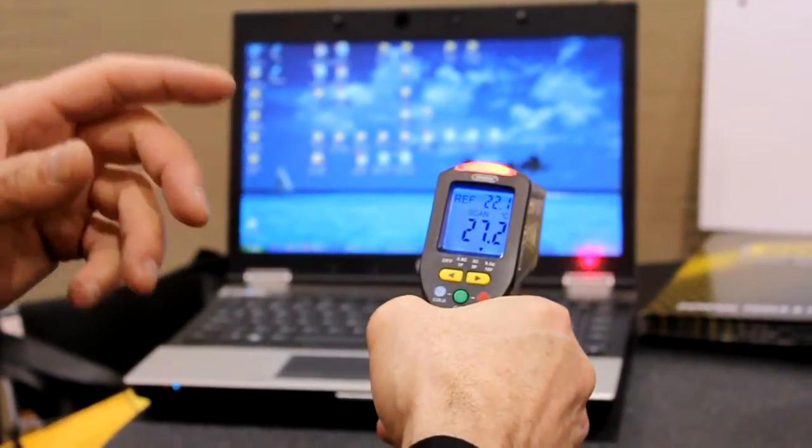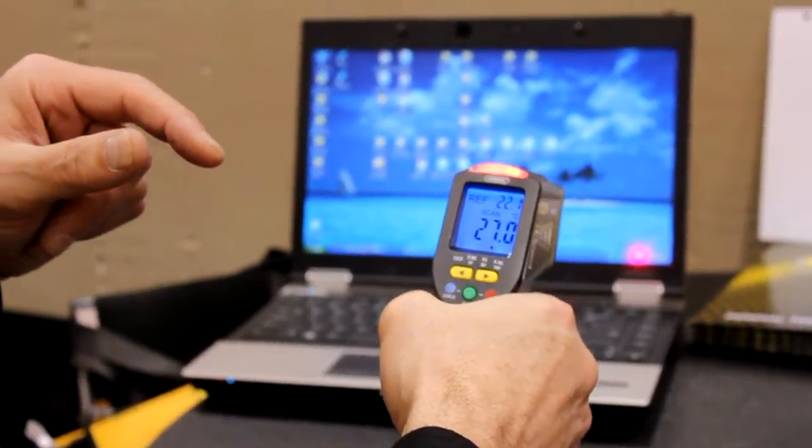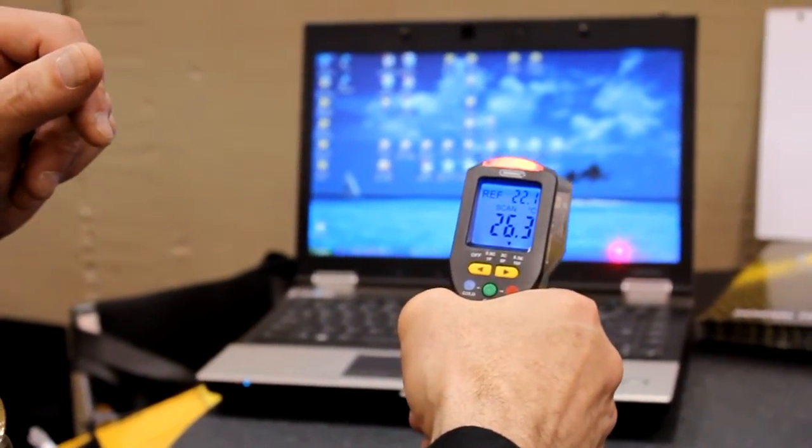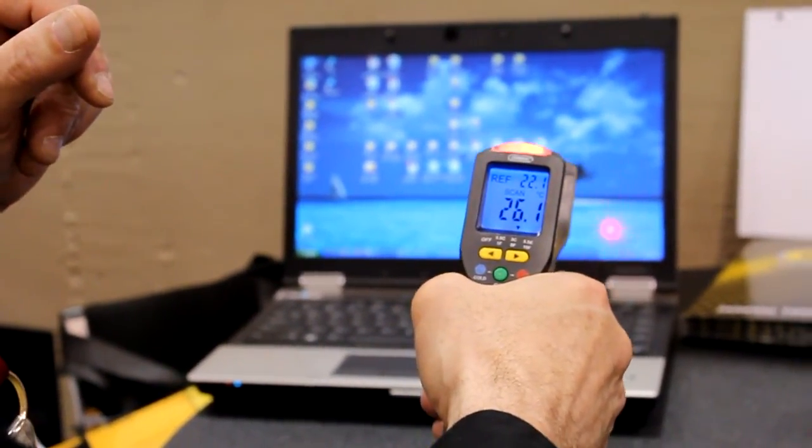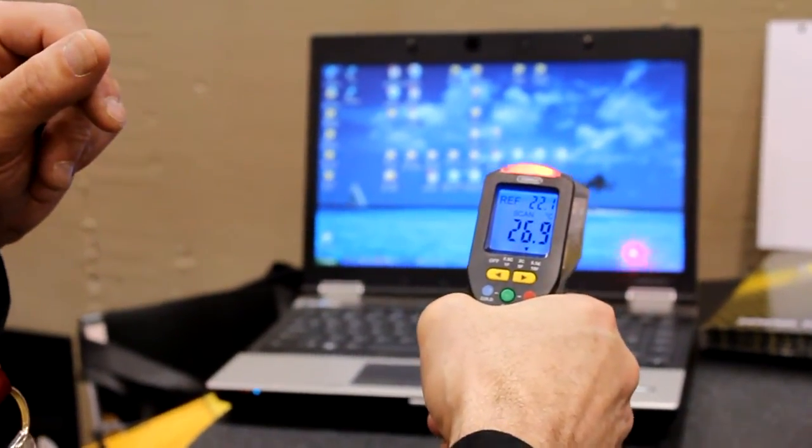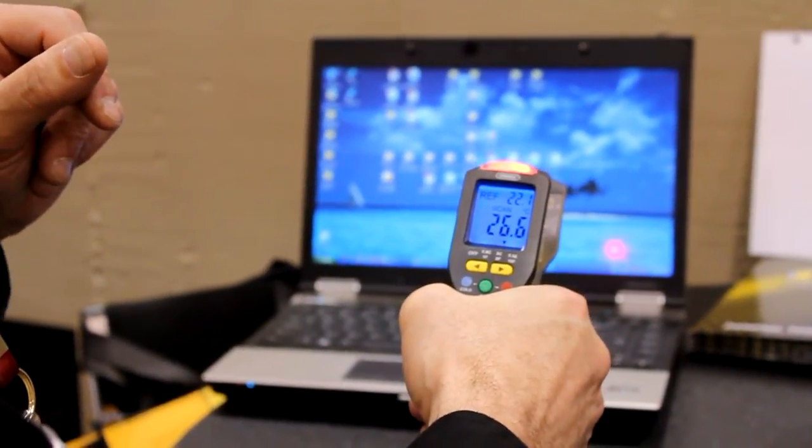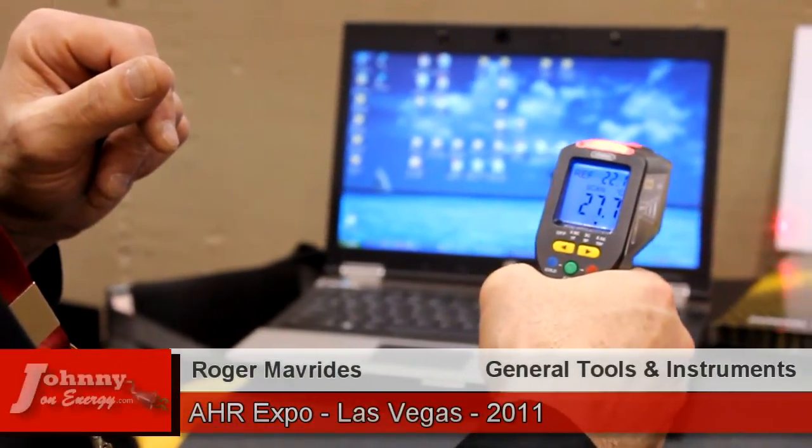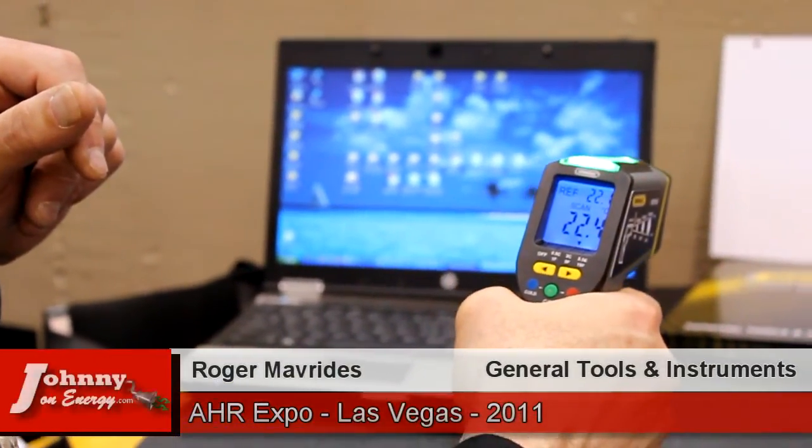Now, this is used for energy audits, for checking your insulation in your walls, looking at leaky windows, any type of duct work that you want to check if the registers are working. So, it has many applications around the home and around your place of work.